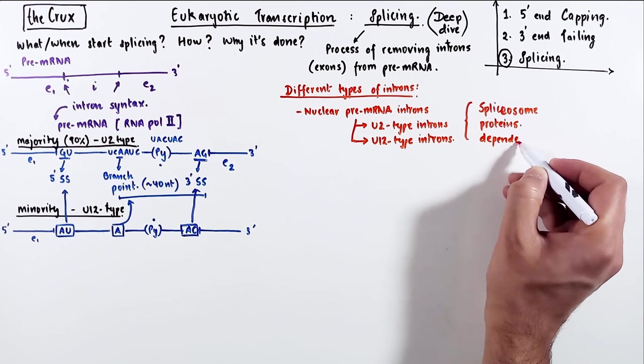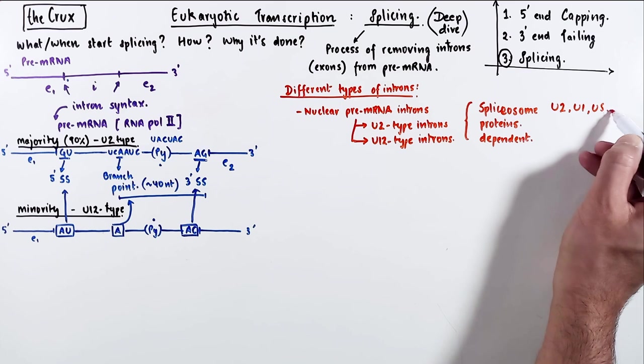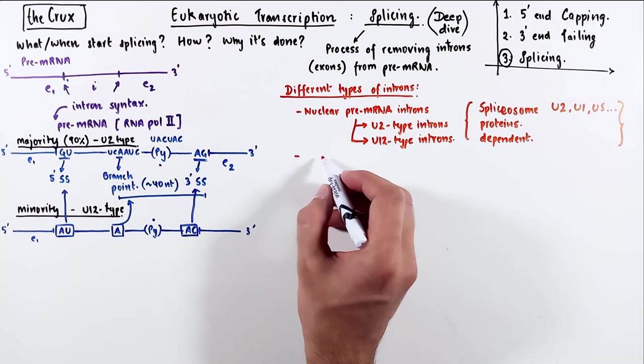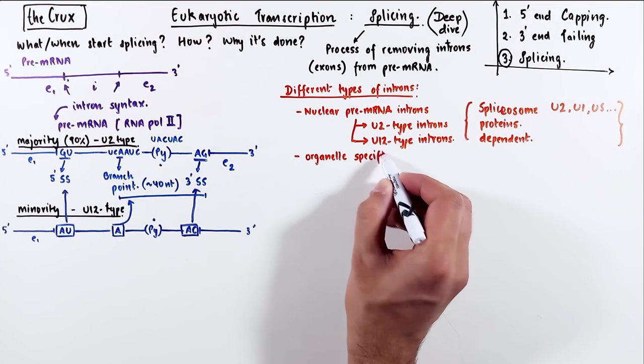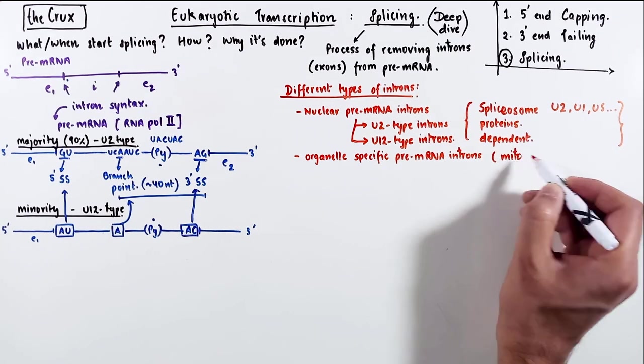These proteins are named U2, U1, U12, and so on. And then we have introns which are very specific to pre-mRNA from organelles, like the mitochondria and chloroplasts.